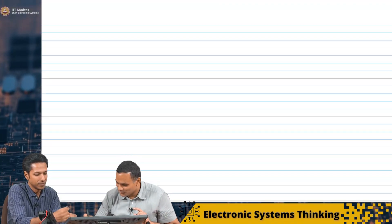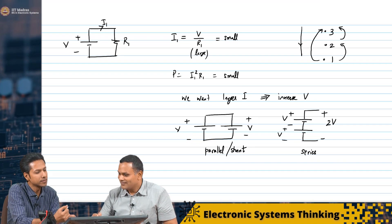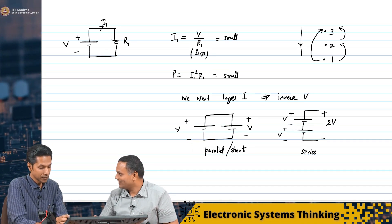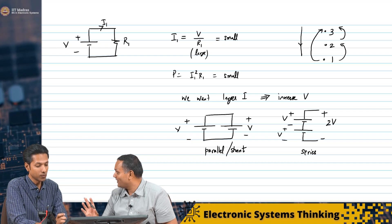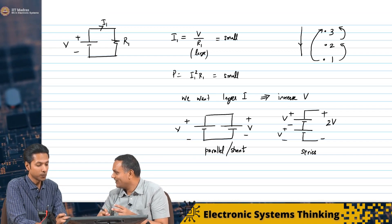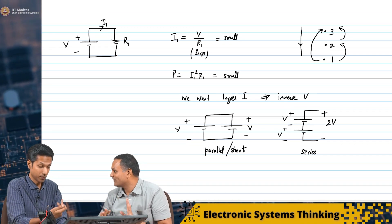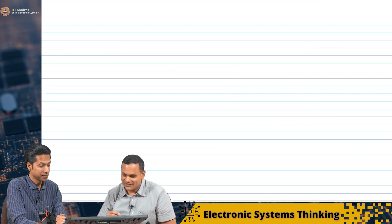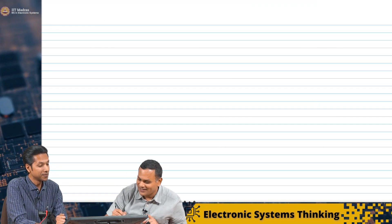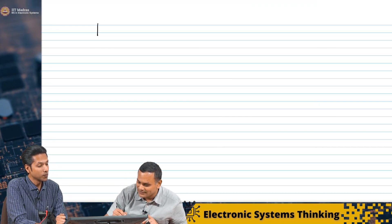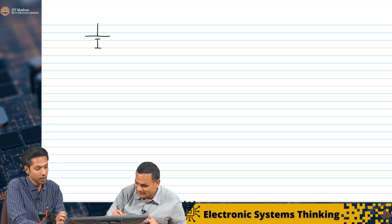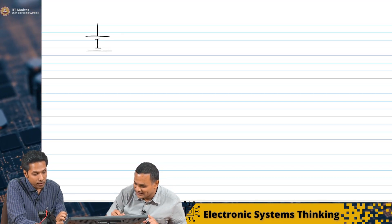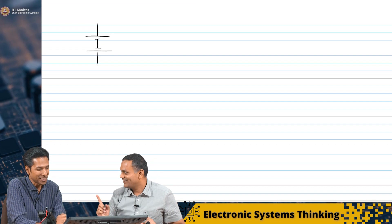Let us see, maybe we can draw it. We showed only 2 connections here — parallel and series. But what you are suggesting, actually there are 4 ways, because there is polarity and the way of connecting. So the way what you are suggesting, I will show it like this. The first battery is connected like this, and the second battery you want to connect like this. Is this correct?